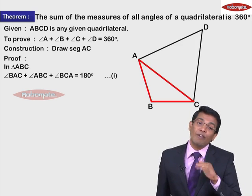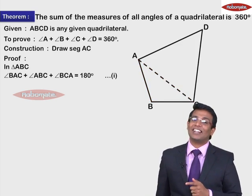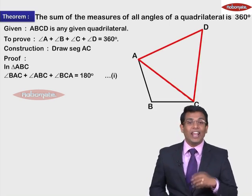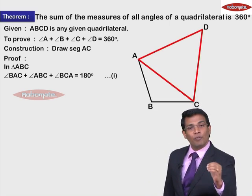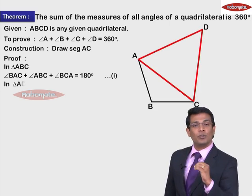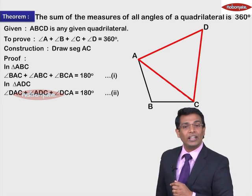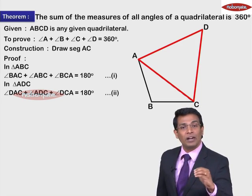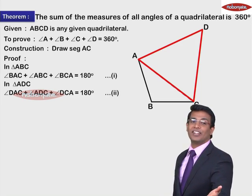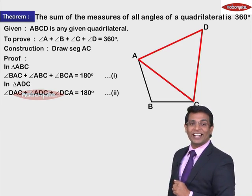Similarly, do we have one more triangle? Yes. Let's take triangle ADC. In triangle ADC we write the sum of all three angles: measure of angle ADC + measure of angle ACD + measure of angle DAC = 180 degrees. This is Statement 2. The reason again remains the same — sum of the measures of angles of a triangle is 180 degrees.